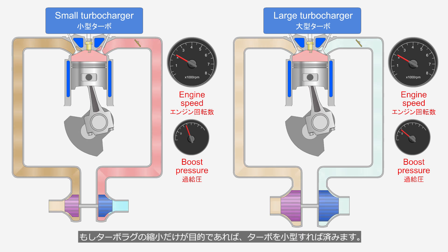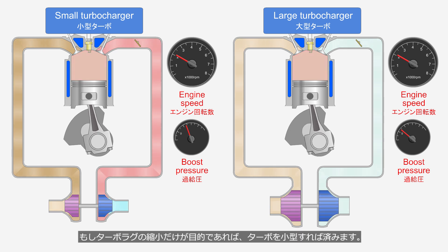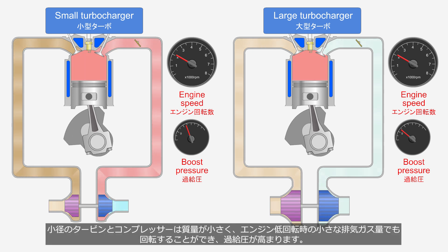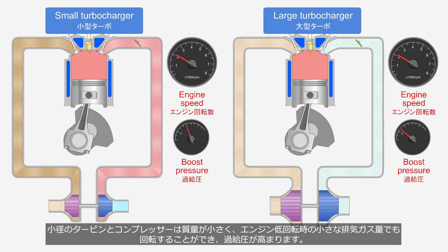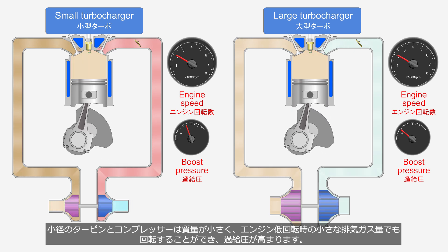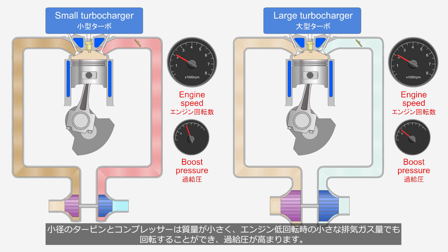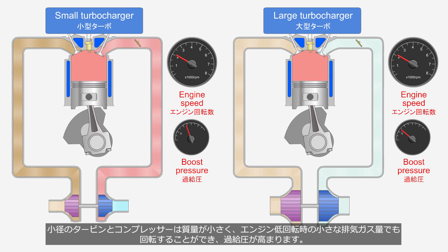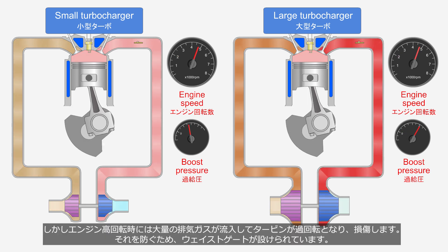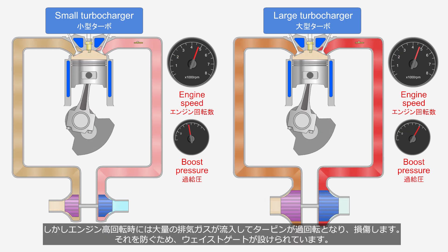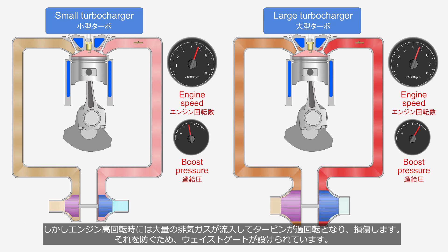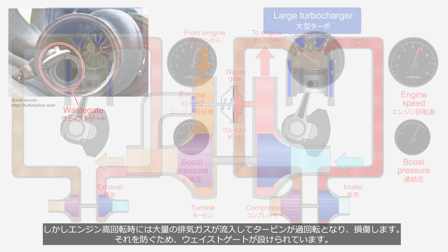If the sole purpose is to reduce turbo lag, simply downsizing the turbo would suffice. The smaller turbine and compressor will have lower mass, allowing them to rotate even with small amounts of exhaust gas at low engine speeds, increasing boost pressure. However, at high engine speeds, a large amount of exhaust gas flows in, causing the turbine wheel to overspeed and potentially causing damage.